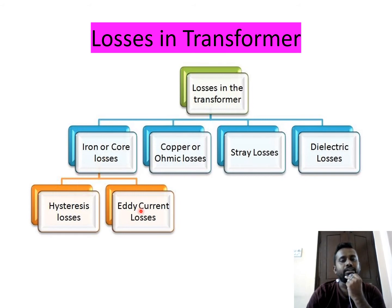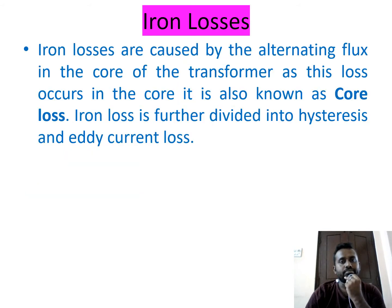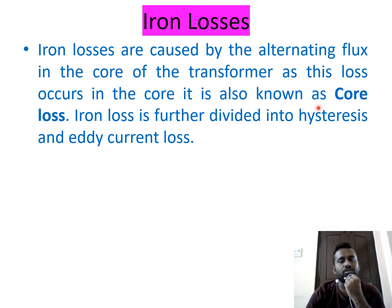Iron losses can be further classified into hysteresis and eddy current losses. These iron losses are generally caused in the core of the transformer by the alternating flux. Because they occur in the core, iron losses are also called core losses.